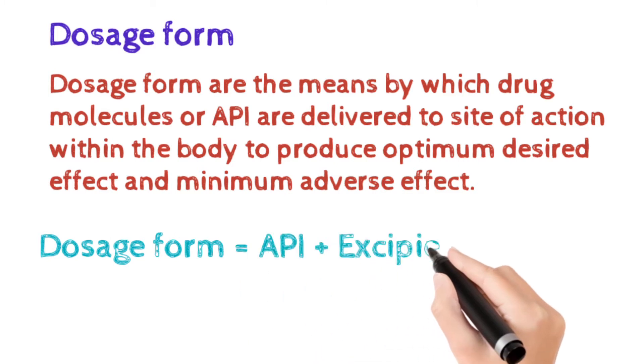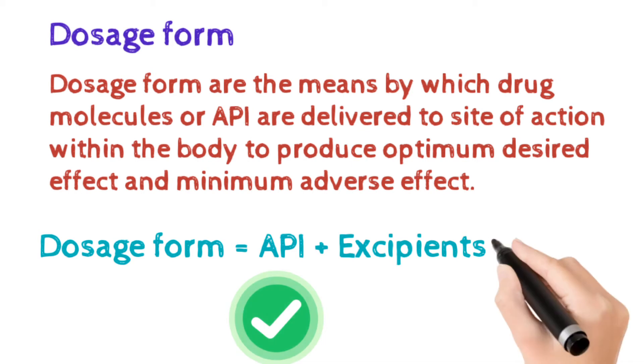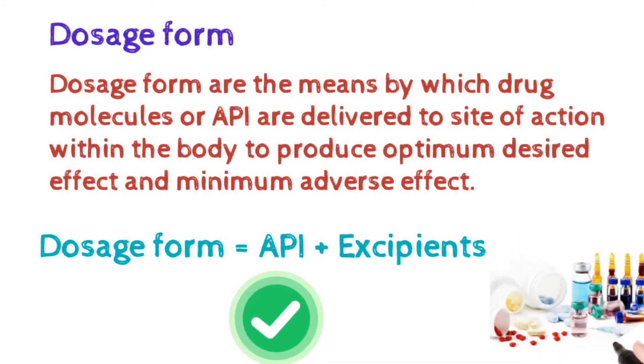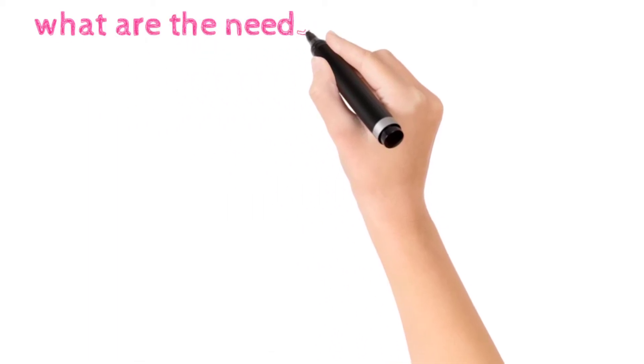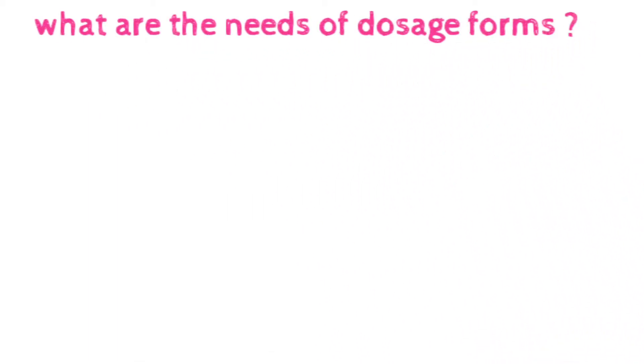Dosage Form is made up of API and Excipient. API and Excipient are most important while making any stable Dosage Form. Their quantity should be specified. Next, what are the needs of Dosage Form? There are many needs of Dosage Form. First one is drug safety and benefits.